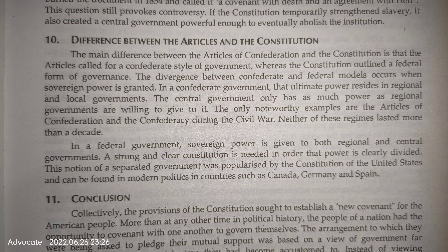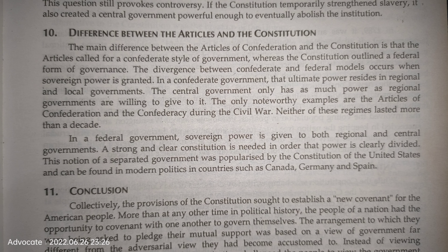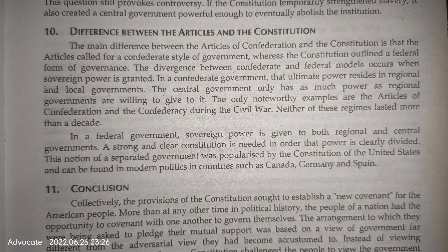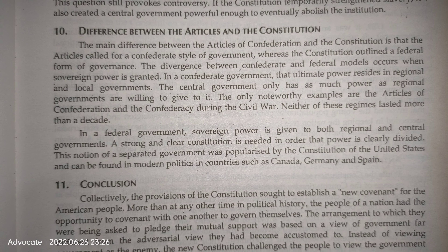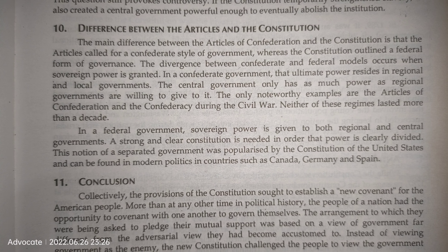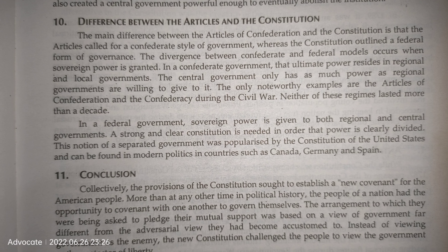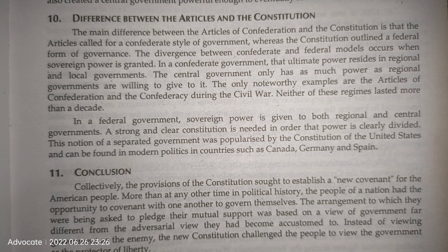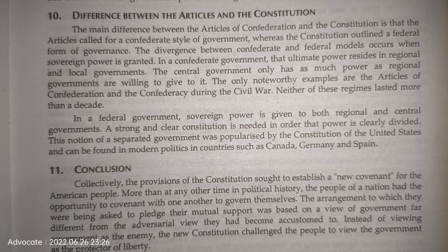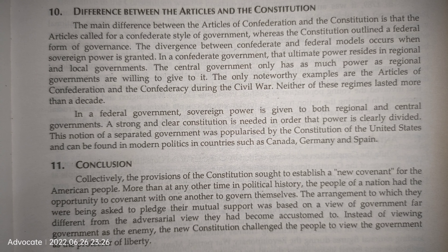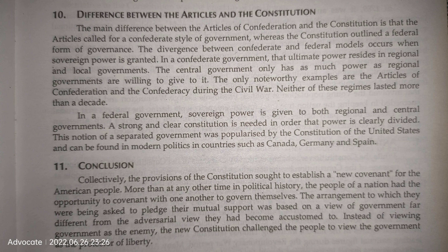The main difference between the Articles of Confederation and the Constitution is that the Articles called for a confederate style of government whereas the Constitution outlined a federal form of governance. The divergence between confederate and federal models occurs in how sovereign power is granted. In a confederate government, ultimate power resides in regional and local governments, and the central government only has as much power as regional governments are willing to give to it.